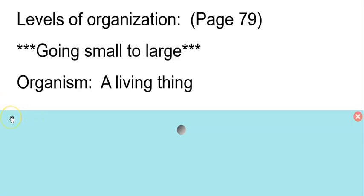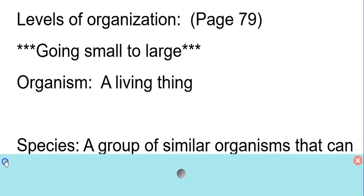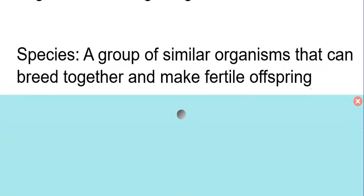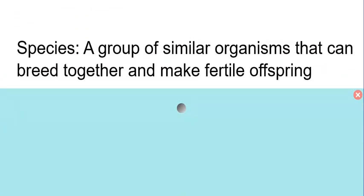Now the next group, it will be putting a few of those guys together. And we're going to call that a species. And a species is a pretty specific word in biology. So we have a specific definition for this. So I'm going to scoot him up. A species is a group of similar organisms that can breed together and make fertile offspring. So that sounds pretty complicated. Let's break that down.